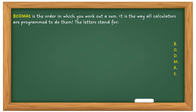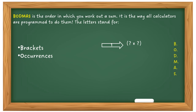BODMAS is the order in which you must work out a sum or an equation — it's the way all calculators are programmed to do them. The letters stand for: B — Brackets, so anything in brackets must be completed first; then O — Occurrences, or as I like to call them, odd things, which can include powers, letters backed up to letters, numbers backed up to letters, numbers backed up to brackets — a whole heap of different things.